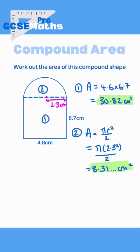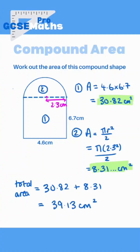Now that we've got the two separate areas, we just need to add them together to find the total, which is 30.82 plus 8.31, and that gives us 39.13 centimeters squared.